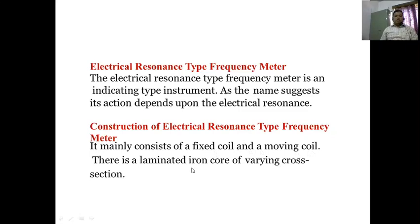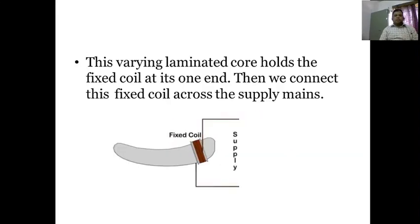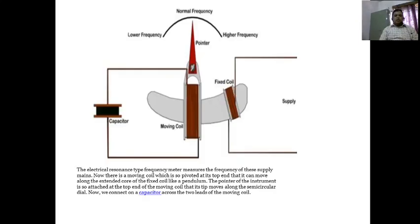There is a varying cross-section and a fixed coil and moving coil, as with all meters. This varying laminated core holds a fixed coil at one end and we connect this fixed coil across the supply mains. The moving coil is connected to a capacitor. You can see here that normal frequency as well as lower frequency and higher frequencies are shown with a pointer.